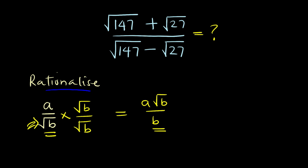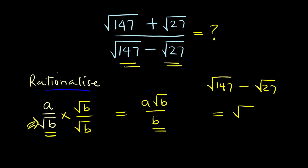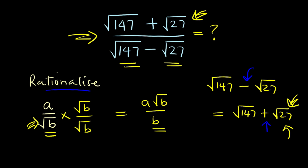In this case we have two terms at the denominator of our given expression. So to rationalize, the conjugate of the square root of 147 minus the square root of 27 is going to be the square root of 147 plus the square root of 27 — simply changing the sign in between the expression. So if it is minus it becomes positive; if it is positive it becomes negative. We are going to multiply the entire expression by this conjugate, both the numerator and the denominator.